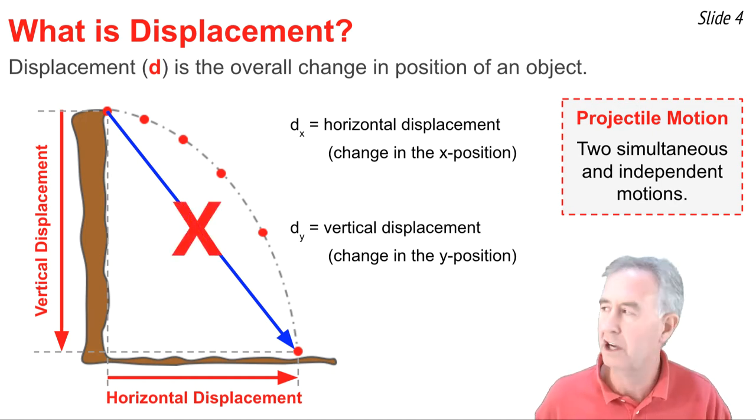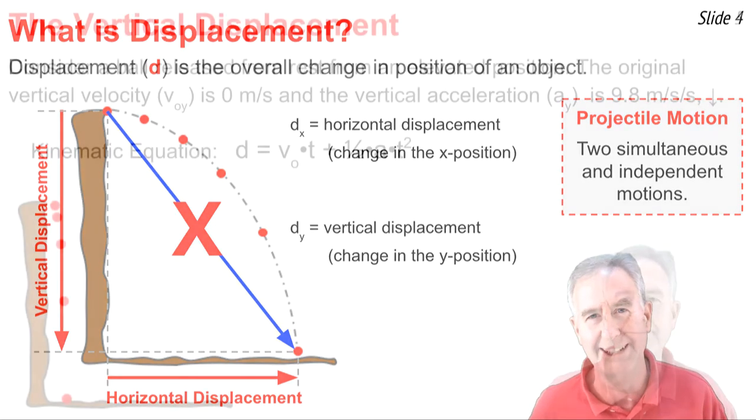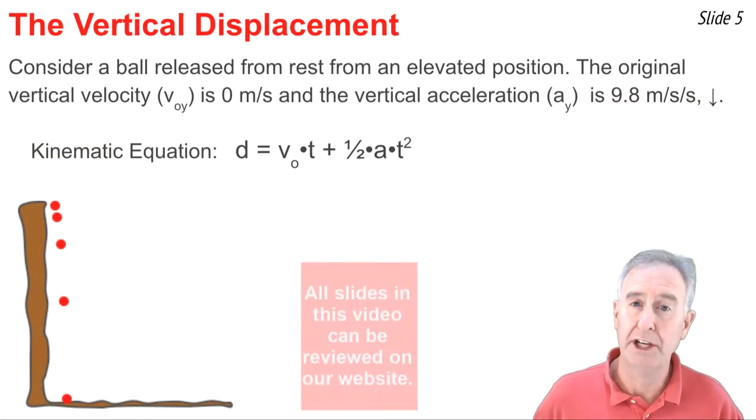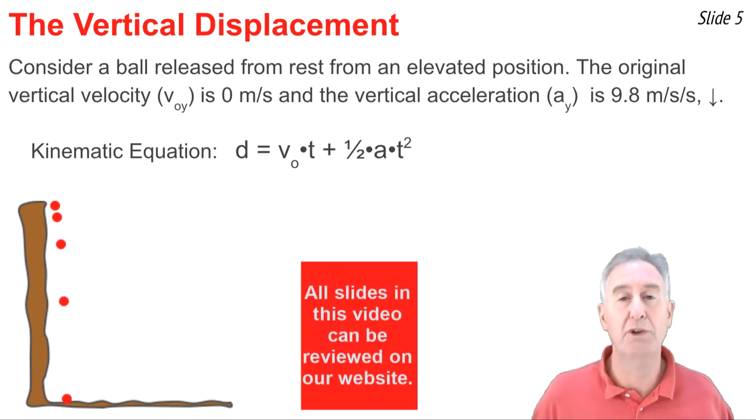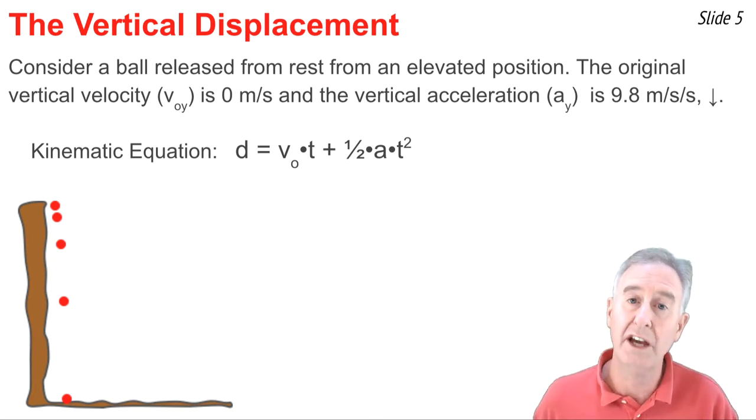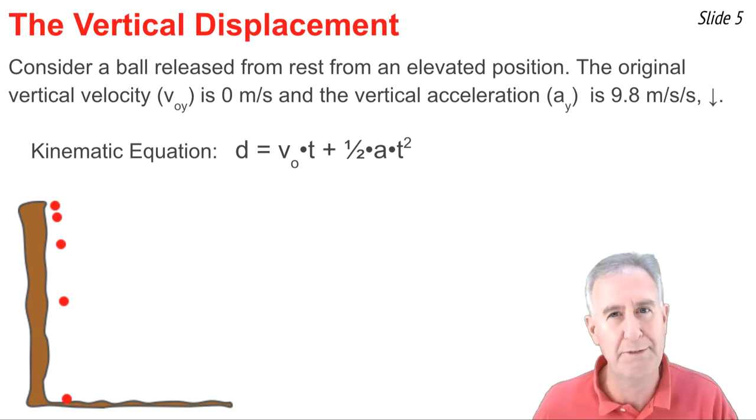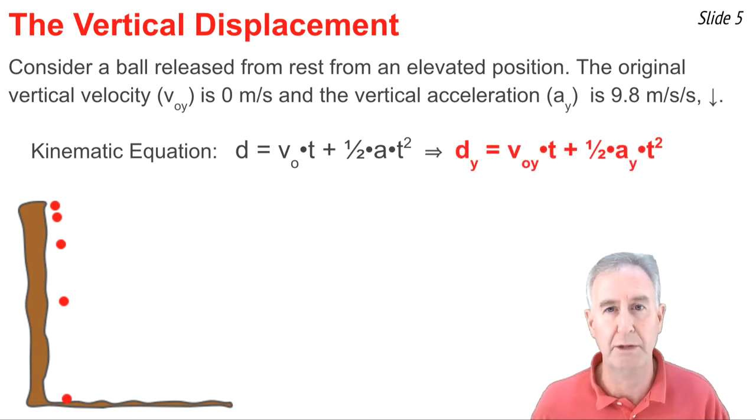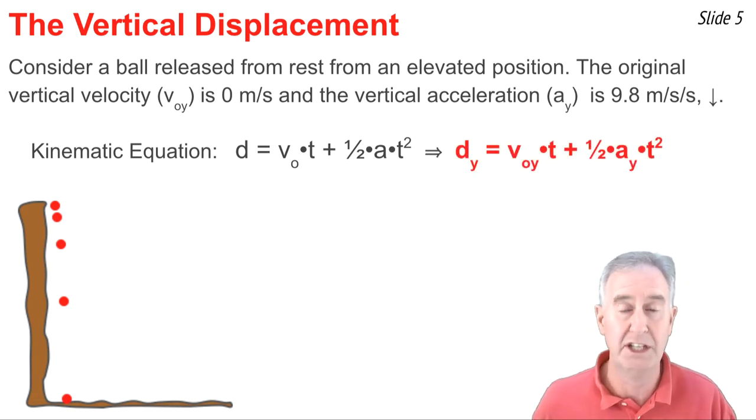We're going to begin talking about the vertical displacement by considering a ball released from rest from the top of a tall cliff. The original Y velocity (v_oy) is 0 m/s because it's not moving upwards nor downwards originally. And the a_Y is 9.8 m/s² downwards. Here's a kinematic equation for one dimensional motion for calculating a displacement. We can use it to calculate vertical displacement as long as the variable values we substitute into it are vertical variable values. For instance, I could rewrite the equation as d_Y = v_oy•t + ½•a_Y•t². Because the ball is released from rest, originally the Y velocity is zero, so the first term cancels out.